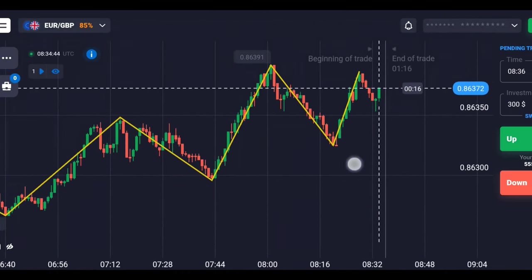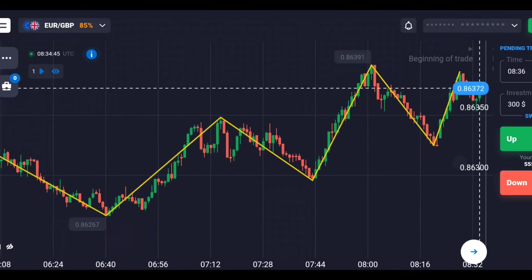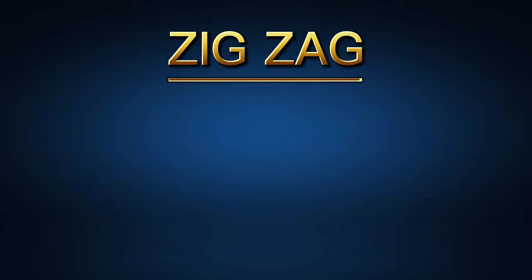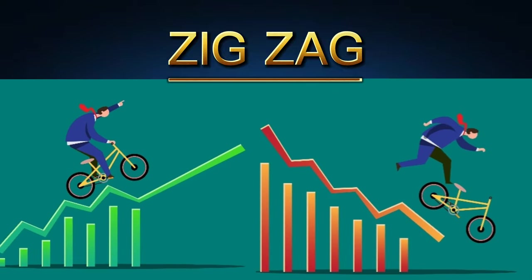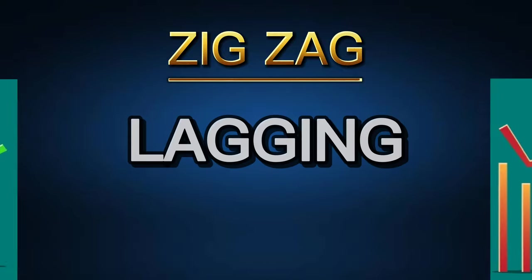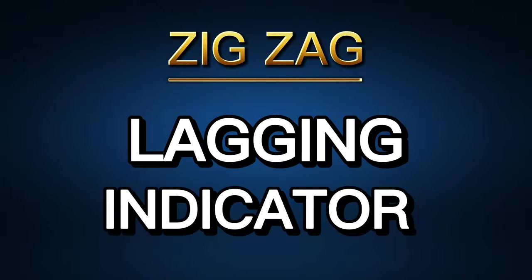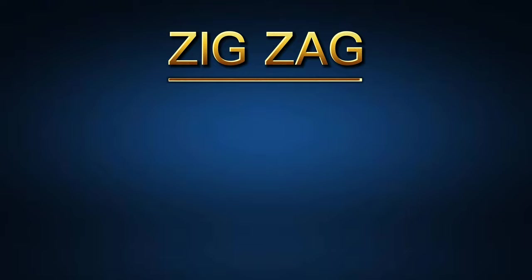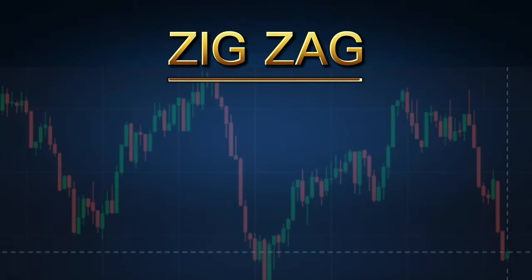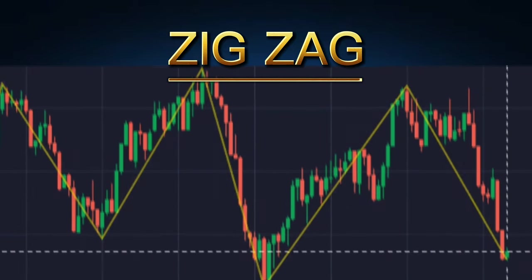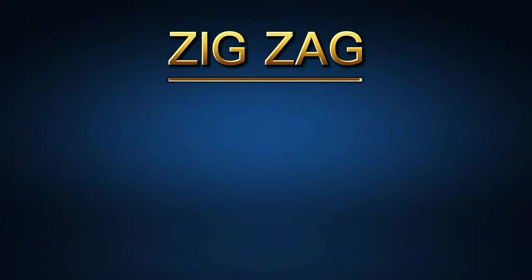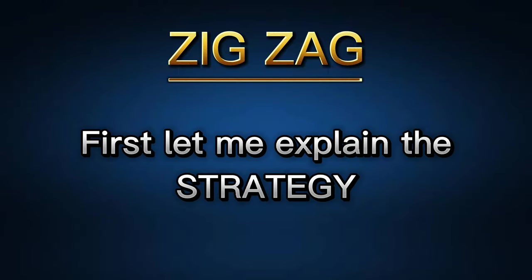This is how the indicator looks. The zigzag indicator is mainly used to find the trends of the market, and it is also a lagging indicator — that means the candles form first and then the zigzag line forms.